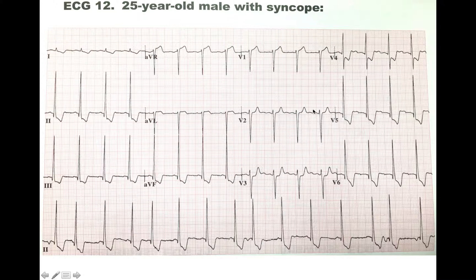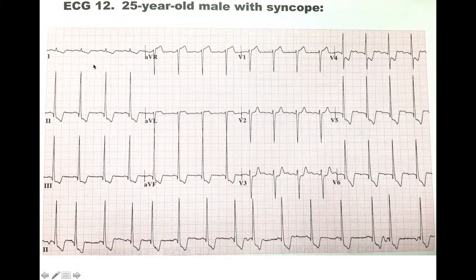So this EKG is leading us toward the idea that this patient has left ventricular hypertrophy. Another common finding in LVH is T wave inversions. Looking at lead 1 — it's a little more pronounced there — as well as in lead 2, you can see T wave inversions. That is a common finding in left ventricular hypertrophy.